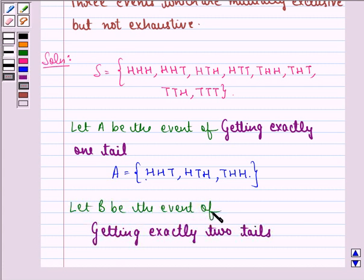Now let B be the event of getting exactly two tails. So sample space for event B will be HTT, THT and TTH because here we have exactly two tails.